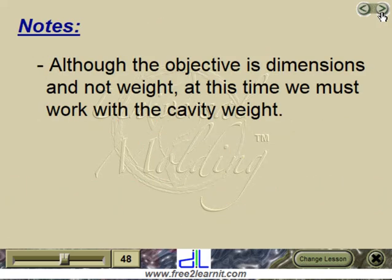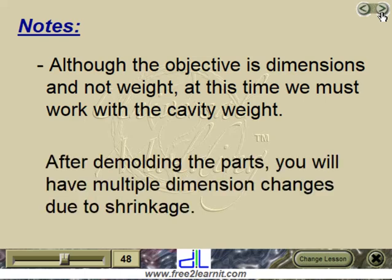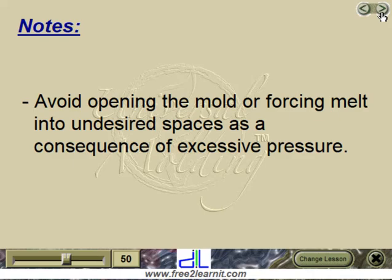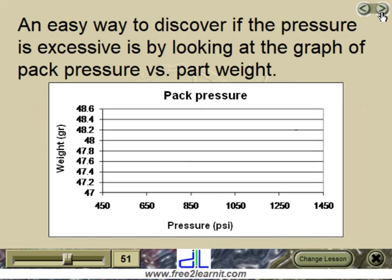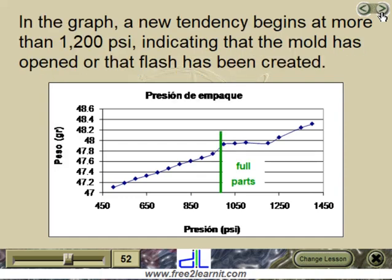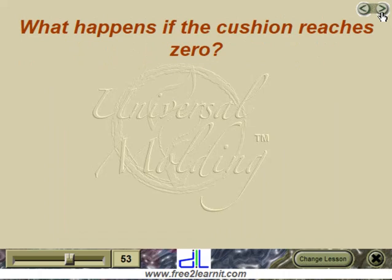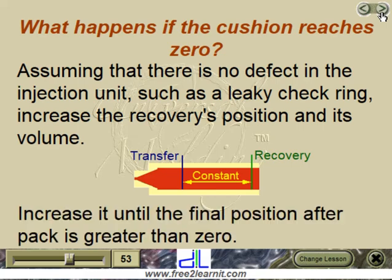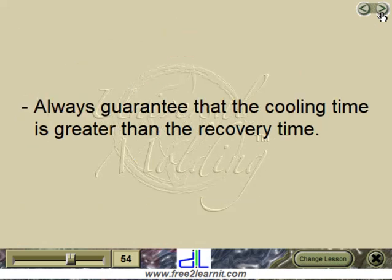Note: although the objective is dimensions and not weight, at this time we must work with the cavity weight. After demolding the parts, you will have to multiply dimension changes due to shrinkage. Remember to weigh the parts without the runner. In each experiment, verify that the final pack position does not equal zero. Avoid opening the mold or forcing melt into undesired spaces as a consequence of excessive pressure. A new tendency beginning at more than 1,200 psi in the graph indicates the mold has opened or flash has been created. If the cushion reaches zero, assuming there is no defect such as a leaky check ring, increase the recovery position and its volume until the final position after pack is greater than zero. Always guarantee that the cooling time is greater than the recovery time.